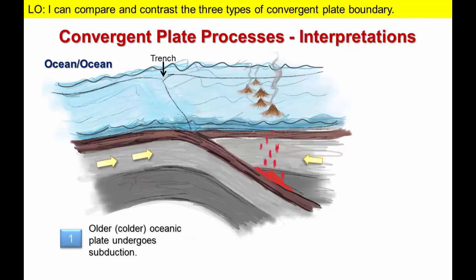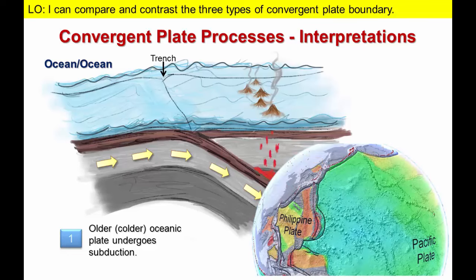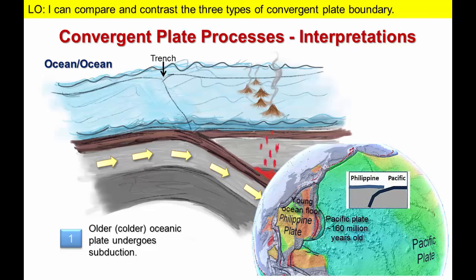Similar processes occur where two plates of oceanic lithosphere collide. One significant difference is that we no longer have a contrast in the composition of the converging plates. So what determines which plate undergoes subduction? While each plate is composed of similar rocks, the rocks are often of different ages. Relatively young oceanic lithosphere is warmer and less dense than older lithosphere. Consequently, when two oceanic plates converge, the plate with the older lithosphere undergoes subduction. We see this in the western Pacific Ocean where the older Pacific plate is subducting below the Philippine plate, composed of rocks more than 100 million years younger.